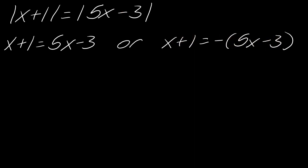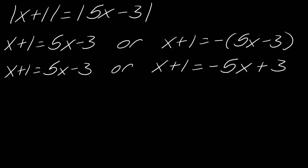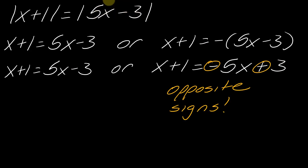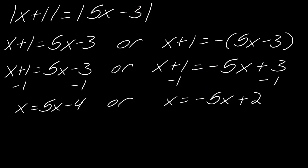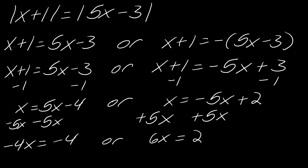Here's what the setup looks like: the positive side stays as is, and the negative side gets a negative sign with parentheses around the entire right-hand expression. That's how we make the entire side negative. Distributing that negative, the left side doesn't change, and the right side becomes negative five X plus three — literally the opposite signs of the original expression. Subtracting one and combining terms, I get negative four X equals negative four or six X equals two, giving x equals one or x equals one third.